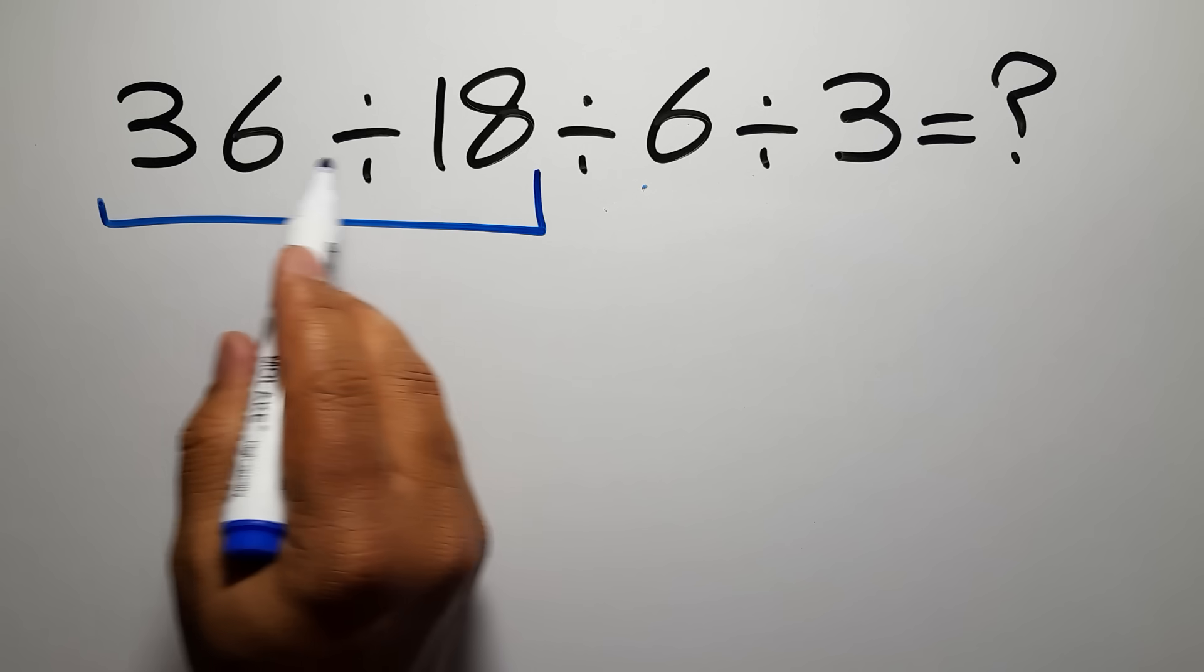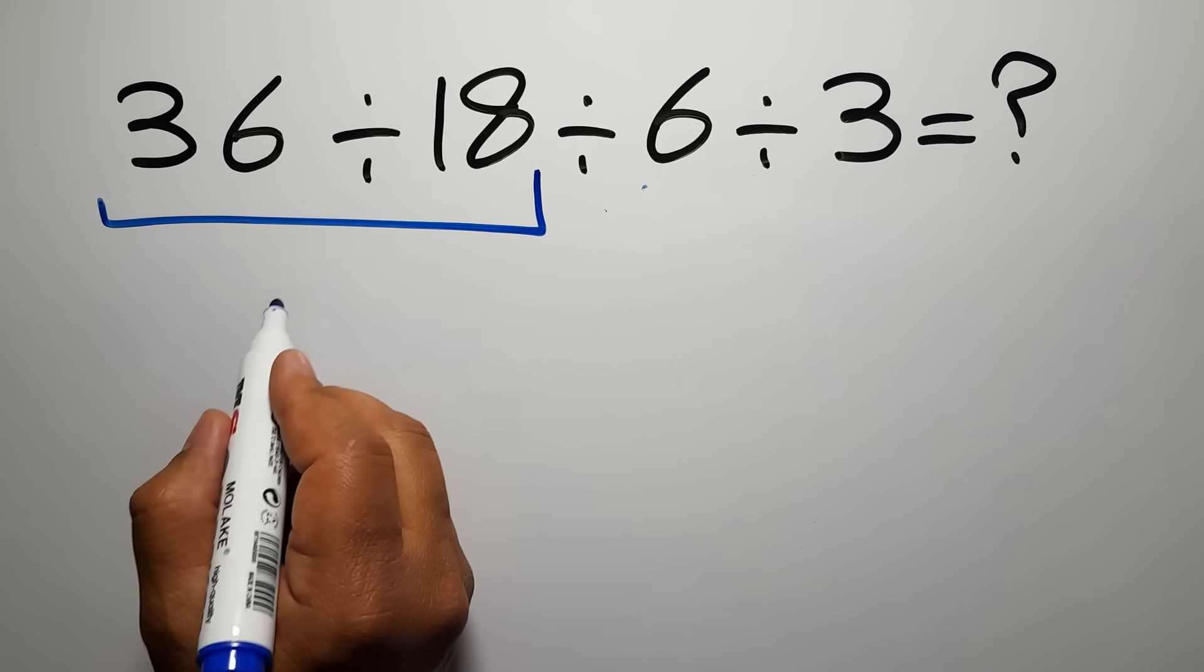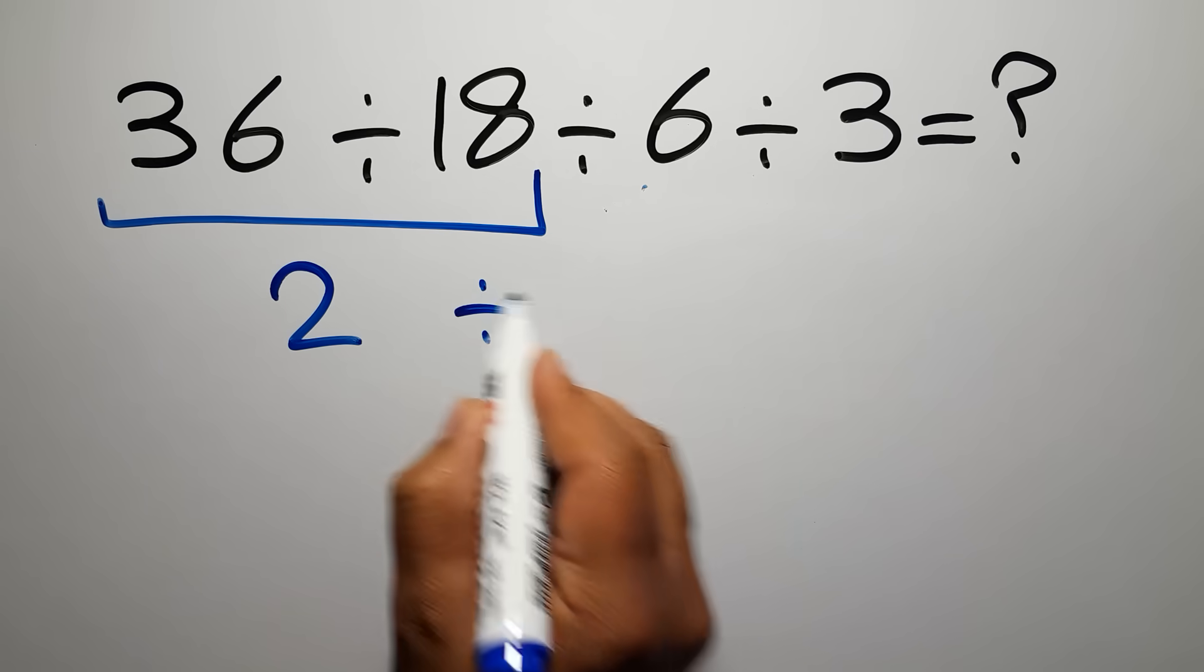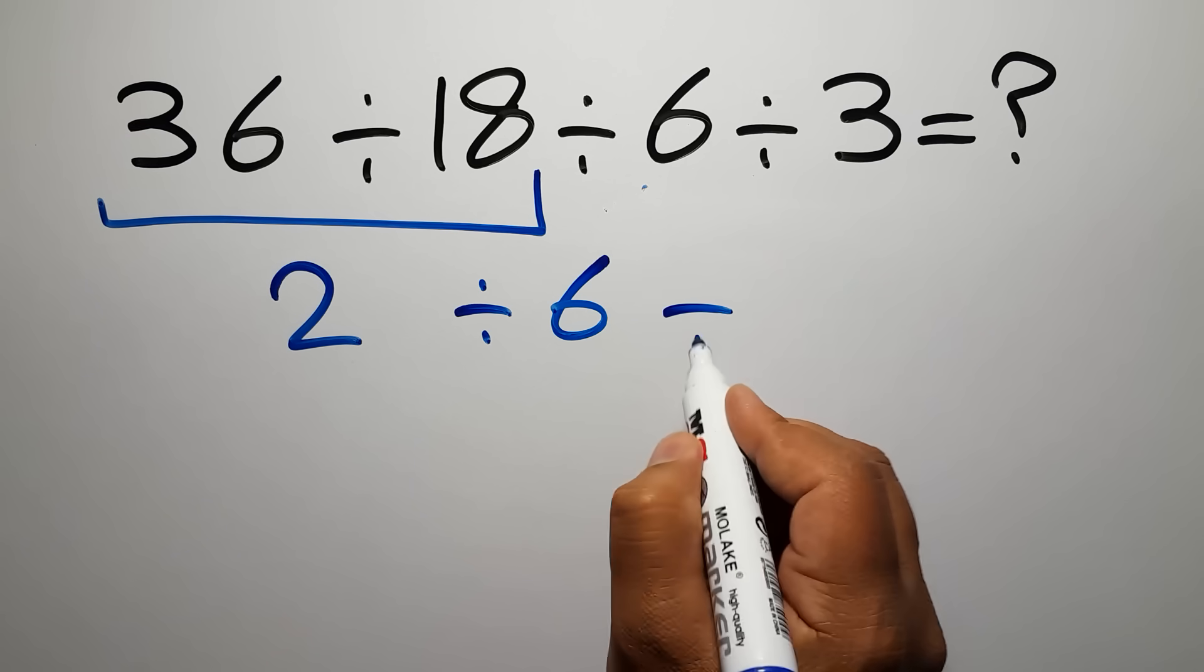So first, 36 divided by 18 equals 2. So we have to divide it by 6 and divide by 3.